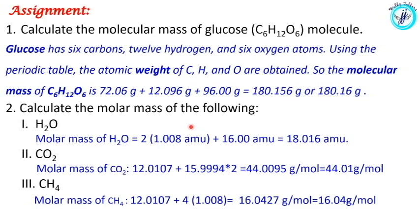First assignment question: calculate the molar mass of glucose, that is C₆H₁₂O₆. Carbon weight × 6 is 72.066 grams, hydrogen weight 1.008 × 12 is 12.096 grams, and oxygen 16 × 6 is 96 grams. Adding them together, the answer is 180.156 grams, rounded to 180.16 grams per mole.